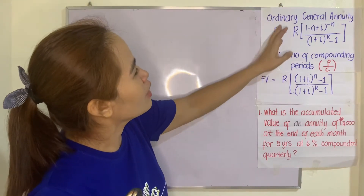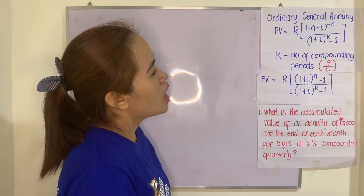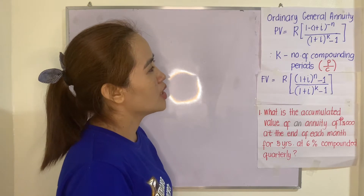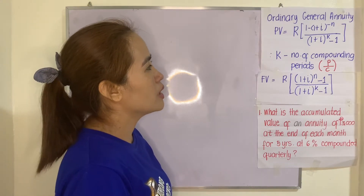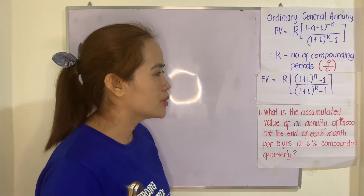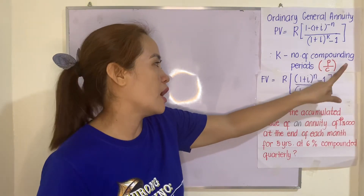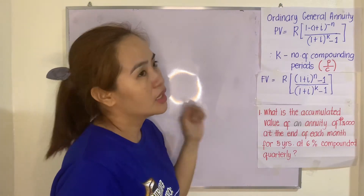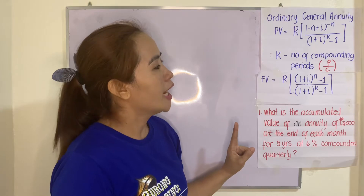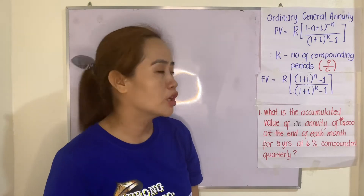We have this formula for ordinary general annuity. PV equals R multiplied by 1 minus (1 plus I) raised to negative N, divided by (1 plus I) raised to K minus 1. K is the number of compounding periods and is equal to P over C. P is M, the compounding period — quarterly is 4, semi-annually is 2, annually is 1, and monthly is 12. C is the number of months in the compounding period.